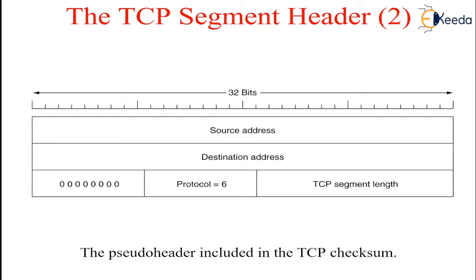Including the pseudo header also violates the protocol hierarchy, since the IP addresses in it belong to the IP layer, not to the TCP layer. UDP uses the same pseudo header for its checksum.